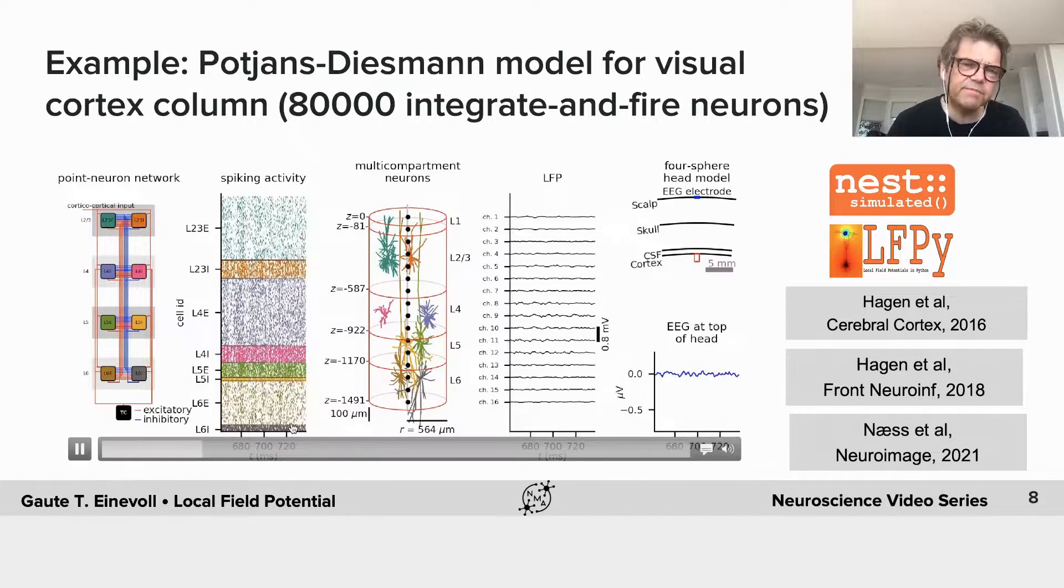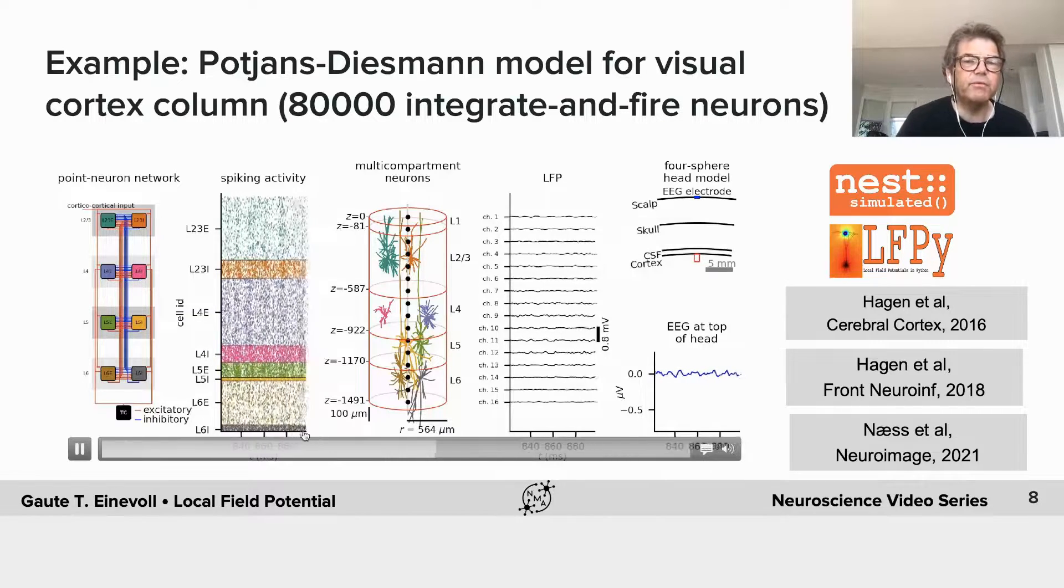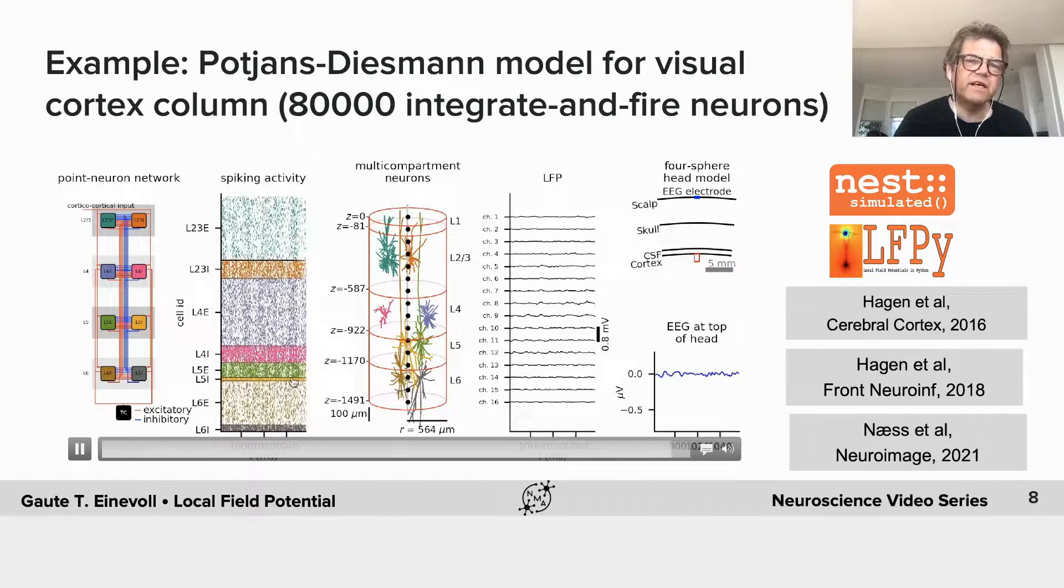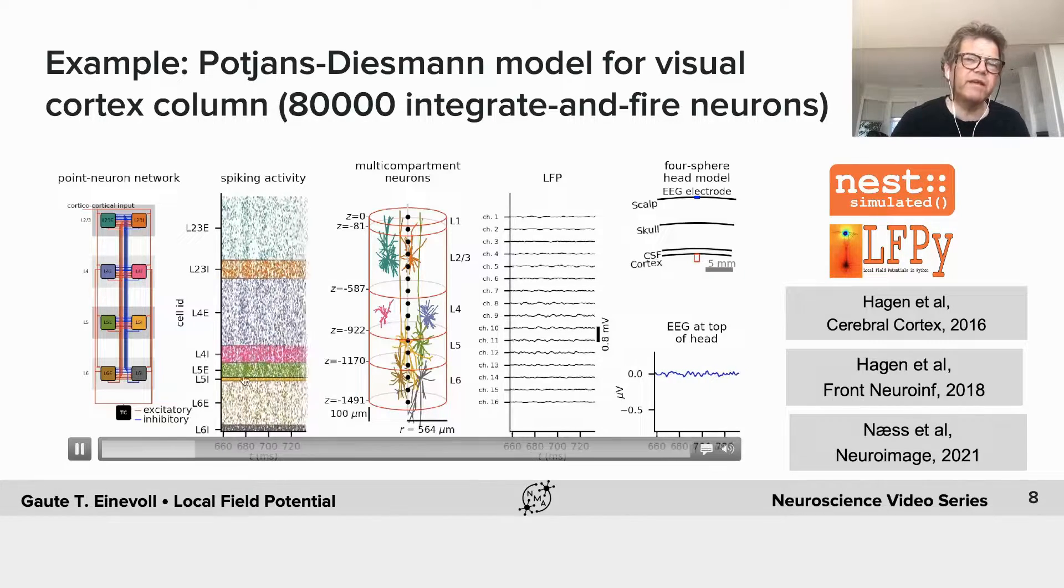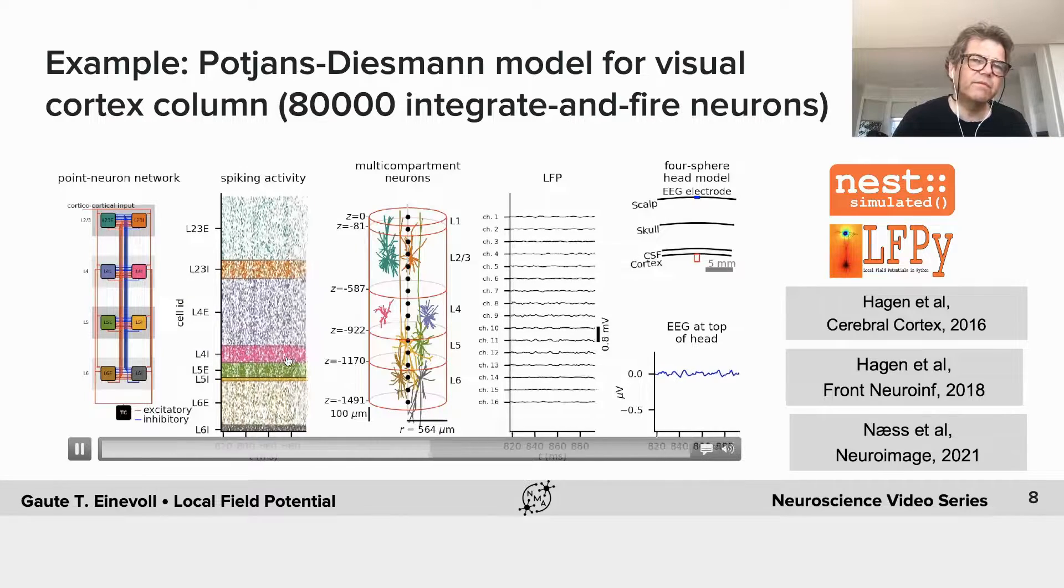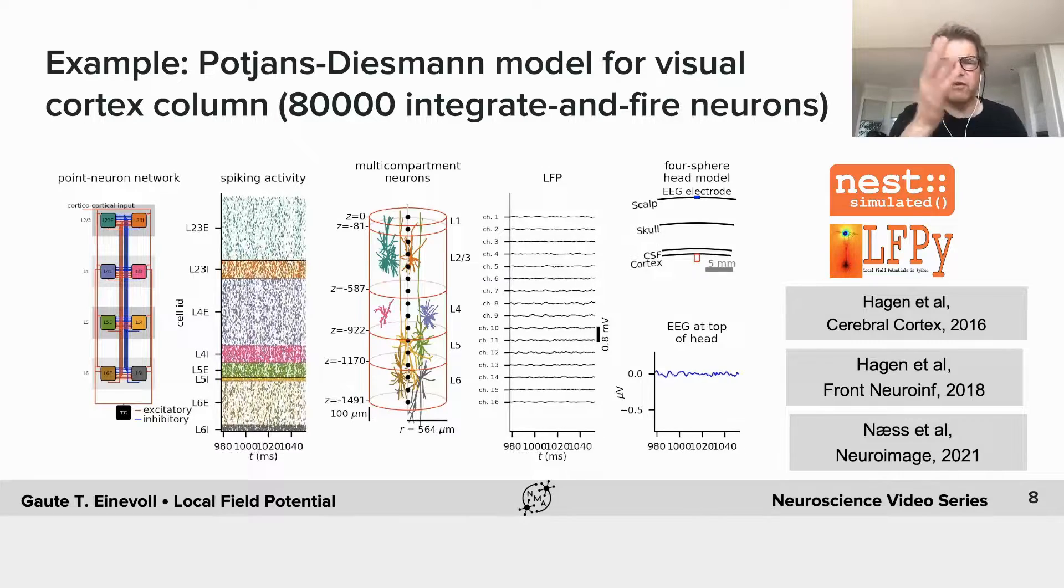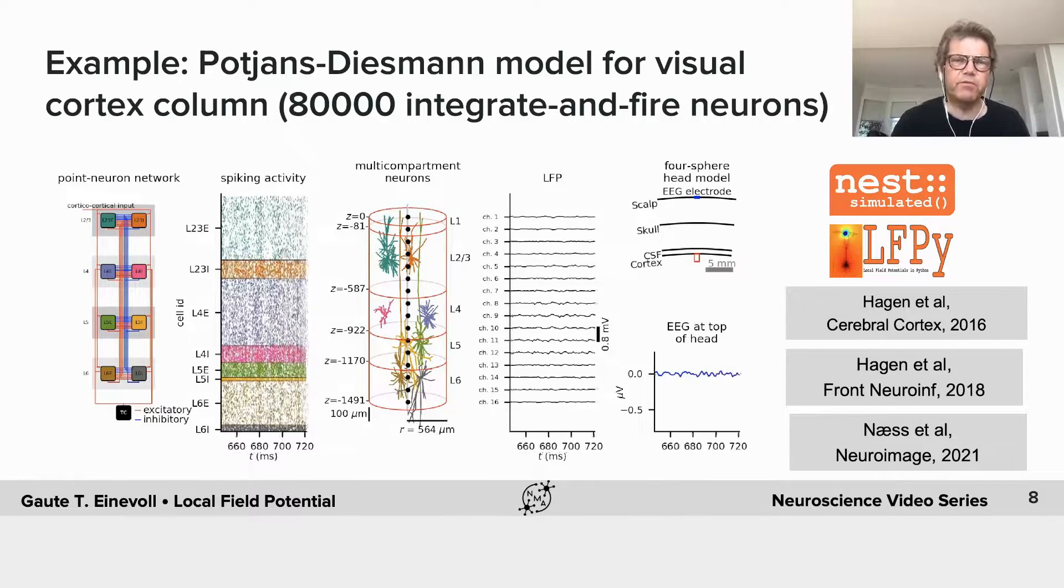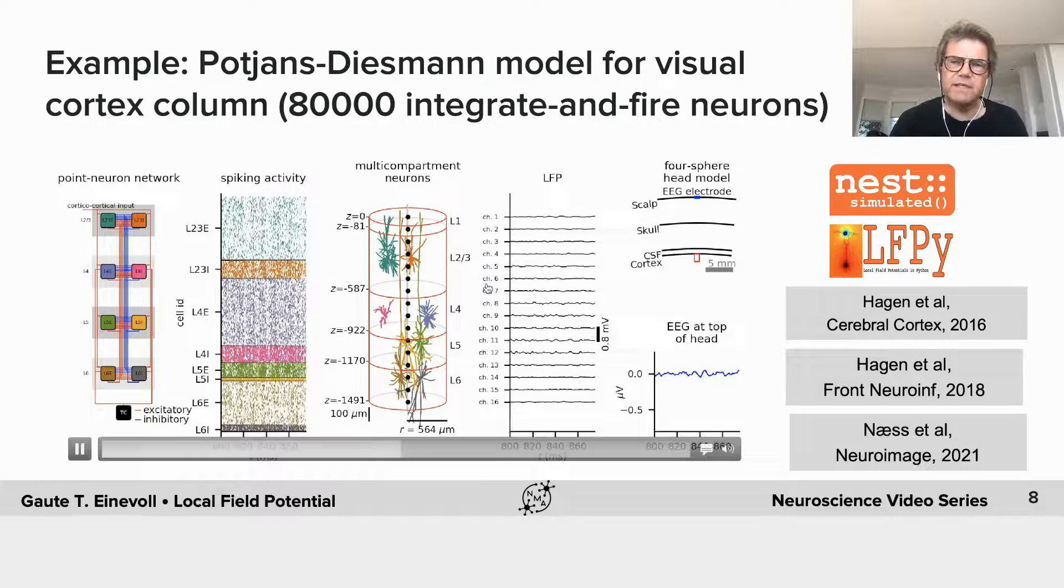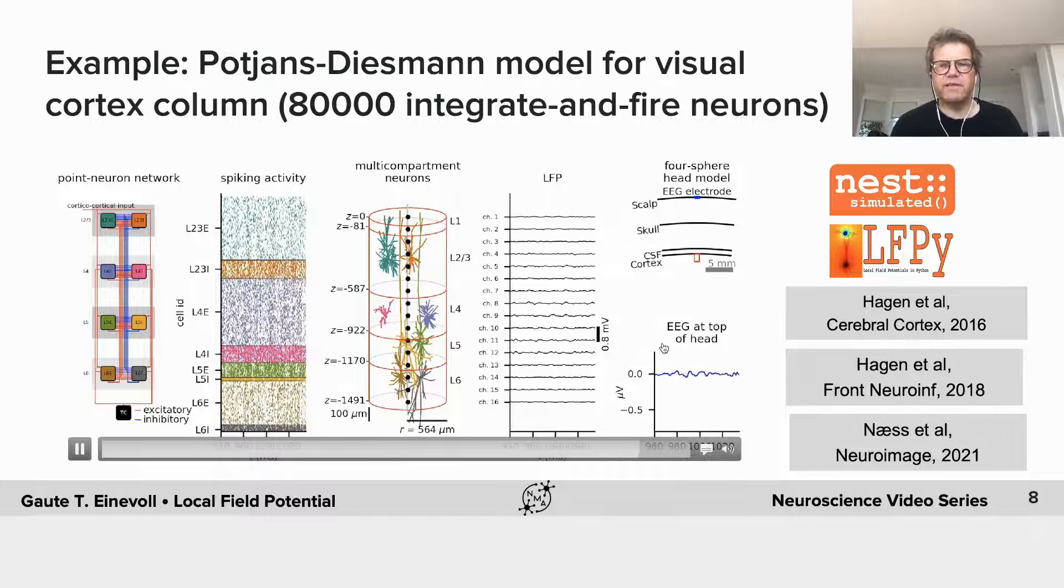The main point here again is to illustrate the principle, but you also see in this case, this visual cortex network gets an input at time 900, and we can see at that time there's this volley of activity spreading across the cortex following this input from the thalamus, and then we can see at the same time we get this activity in LFP and also at the EEG.